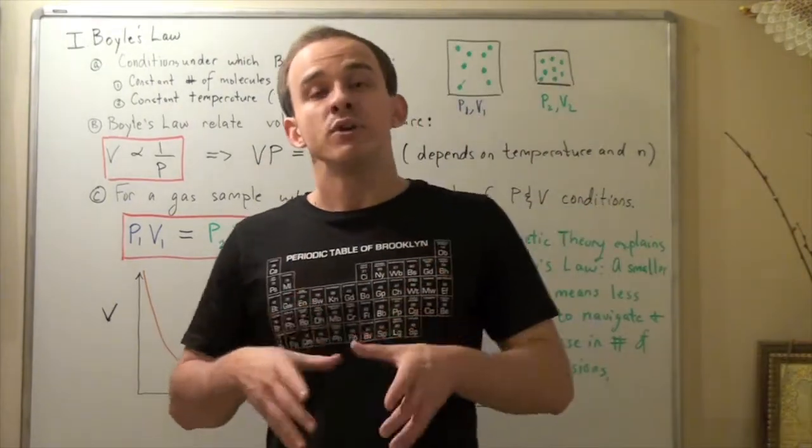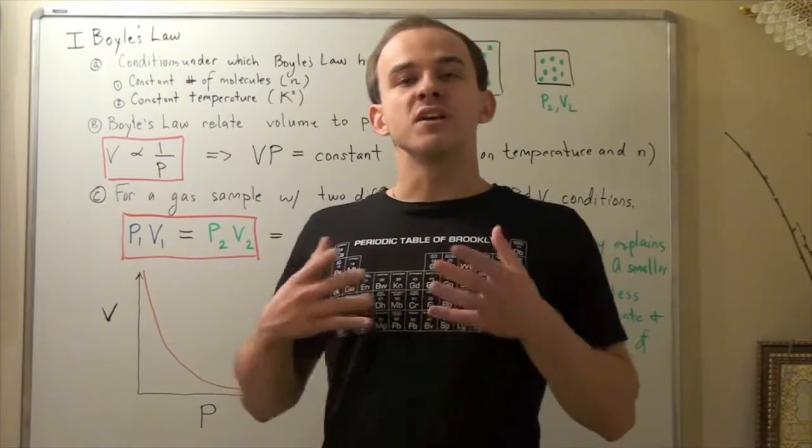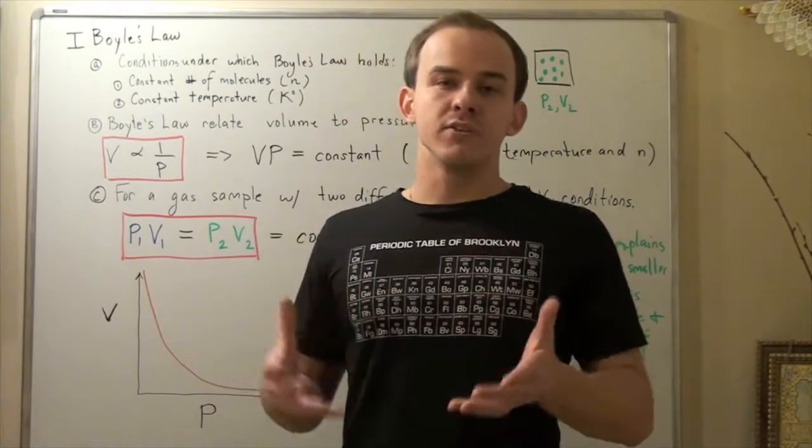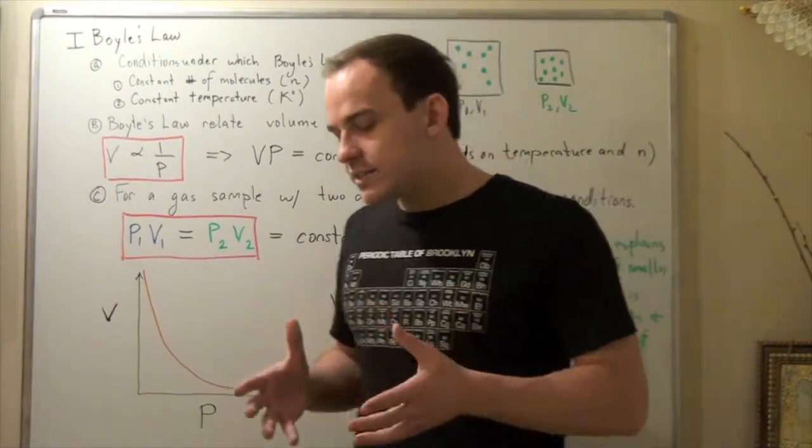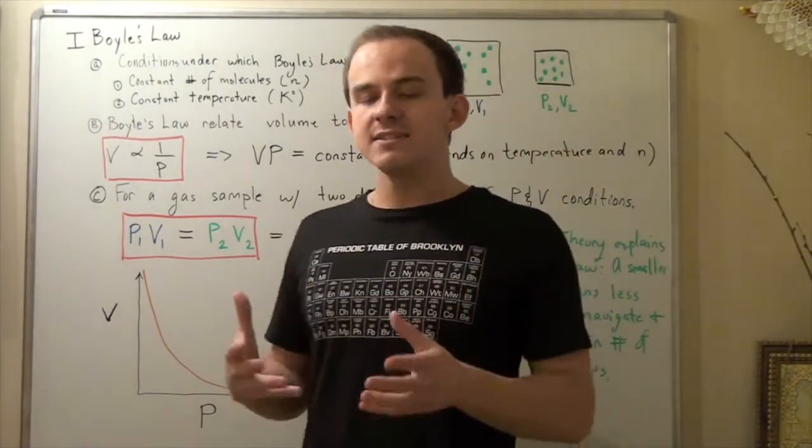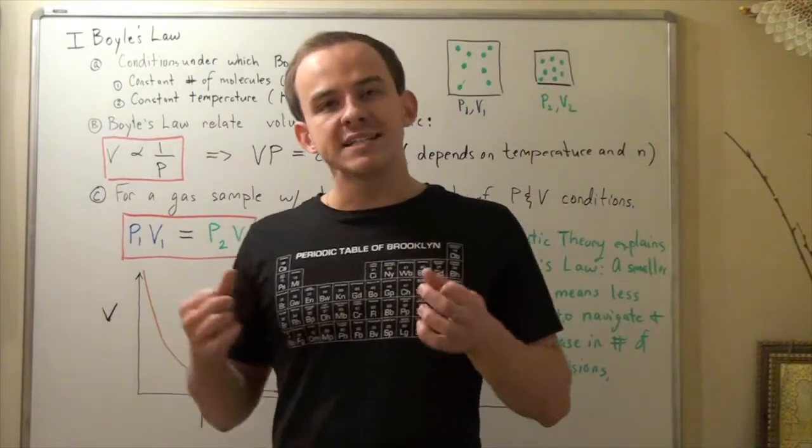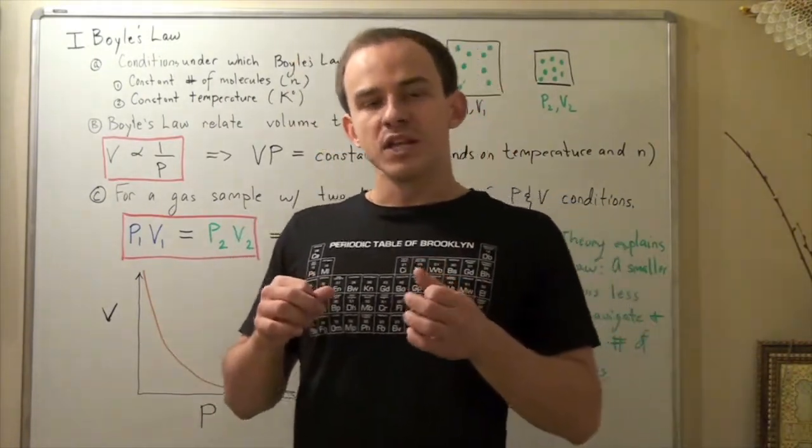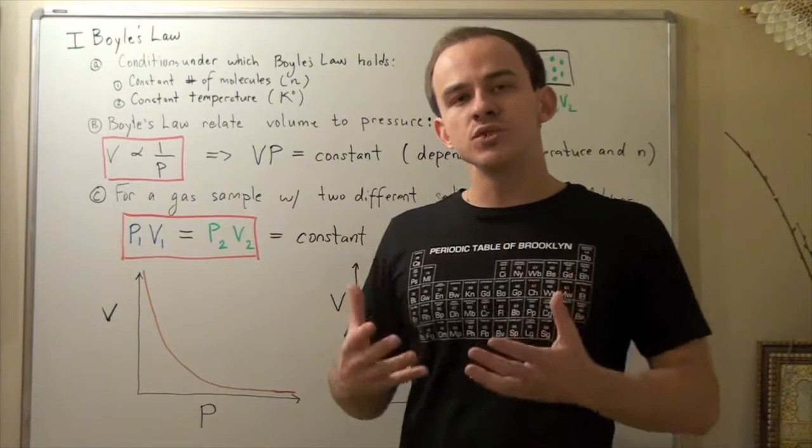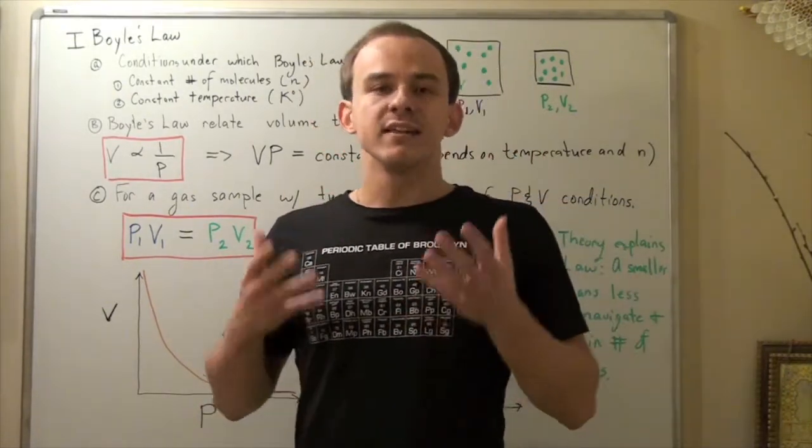In order to explain exactly how individual gas molecules behave, scientists came up with something called the Kinetic Molecular Theory. This theory is basically a bunch of assumptions that they make about gases that helps us understand how individual gas molecules interact. The Kinetic Theory is used to explain the behavior of gases on a nanoscale level.